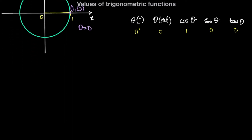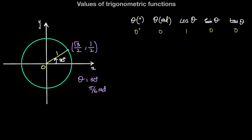The next value is when theta is equal to 30 degrees, subtended counterclockwise from the positive x-axis. 30 degrees is pi over 6 radians, since pi radians is 180 degrees and 30 is one sixth of 180. When theta is pi over 6 radians, the cosine — the x-coordinate on the unit circle — is square root of 3 over 2. The y-coordinate, sine theta, is 1 over 2. And tan theta, which is sine over cosine, is 1 over root 3.